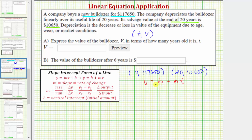We know that the initial value of the bulldozer is the new cost of $117,650. So we know that the value V must equal 117,650 plus MT, where M is the slope, which represents the rate of change. And because the value is going down, we know M is going to be negative.